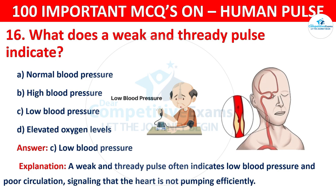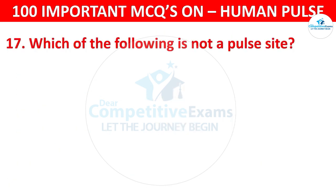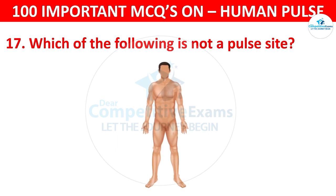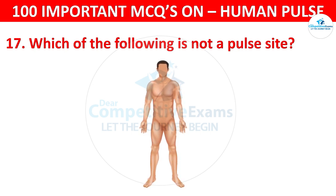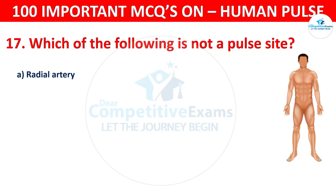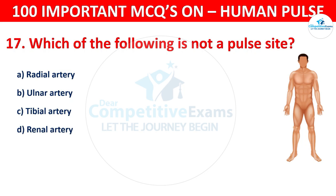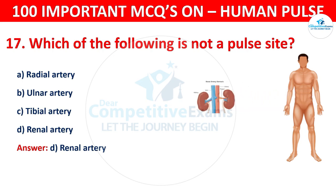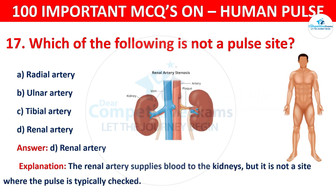Question number 17: Which of the following is not a pulse site? Your options are: Radial artery, Ulnar artery, Tibial artery, or Renal artery. The correct answer is D, that is renal artery. The renal artery supplies blood to the kidneys but it is not a site where the pulse is typically checked.